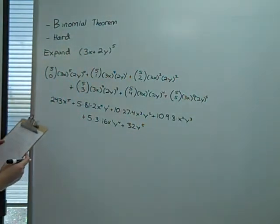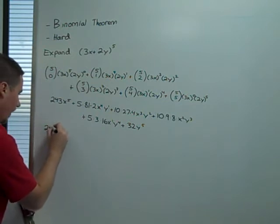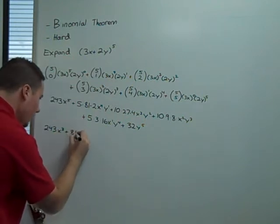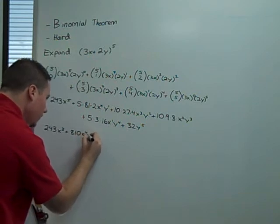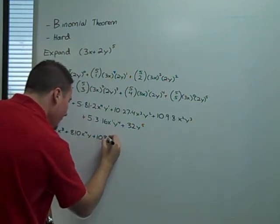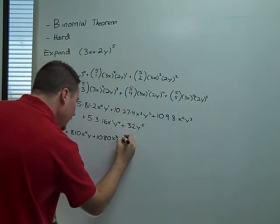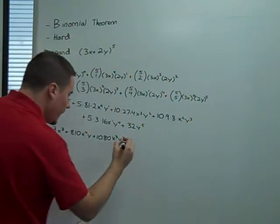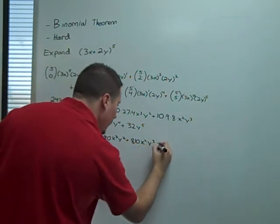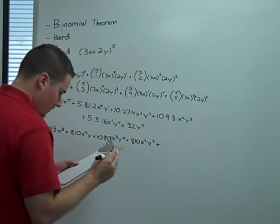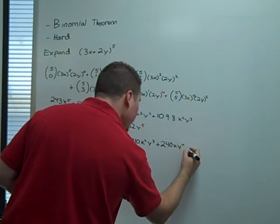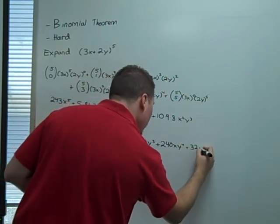we will get 243 x to the fifth plus 810 x to the fourth y plus 1080 x cubed y squared plus 810 x squared y cubed plus, let's see, 240 x y to the fourth and then 32y to the fifth.